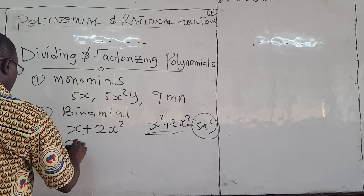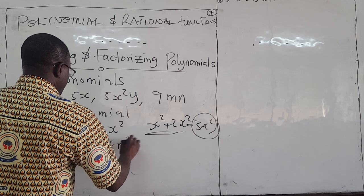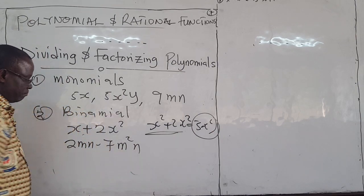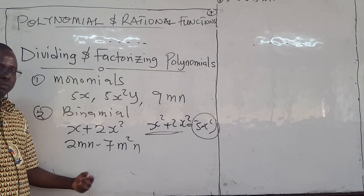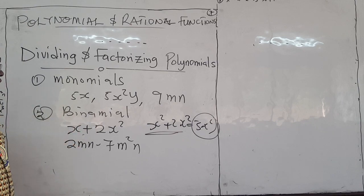So another example would be, let's say, 2mn minus, let's say, 7m squared. This you can't do. You can't do that. So those are binomials.